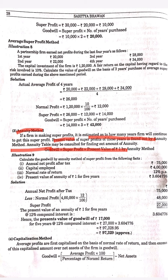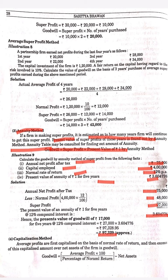The formula for goodwill by the annuity method is: Super Profit × Present Value of One Rupee Annuity. Here in the illustration, the annual profit after tax is ₹75,000. Normal profit is ₹4 lakh × 12% = ₹48,000. So super profit is ₹27,000. The present value of the annuity of ₹1 is given, so we multiply: the goodwill comes to ₹97,329.